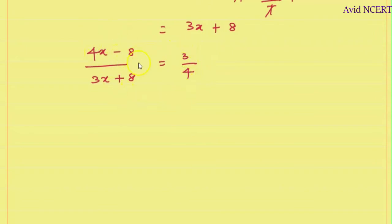Now cross multiplying and simplifying, we can find the value of x. 4 times 4 is 16x, minus 8 times 4 is 32. This equals 3 times 3 is 9x, plus 3 times 8 is 24.